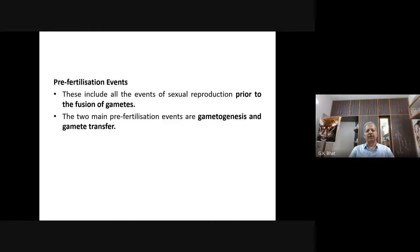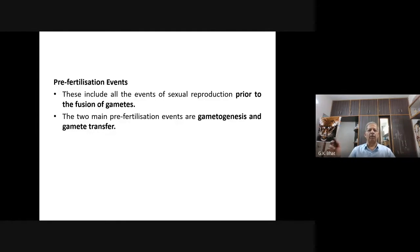Taking up pre-fertilization: pre-fertilization is prior to fertilization. These events include all the events of sexual reproduction prior to the fusion of gametes. Fusion of gametes is fertilization. What you come across prior to the fusion of gametes is formation of gametes. This formation of gametes is known as gametogenesis. The two main pre-fertilization events are: one, gametogenesis, that is formation of gametes; and another one is gamete transfer.